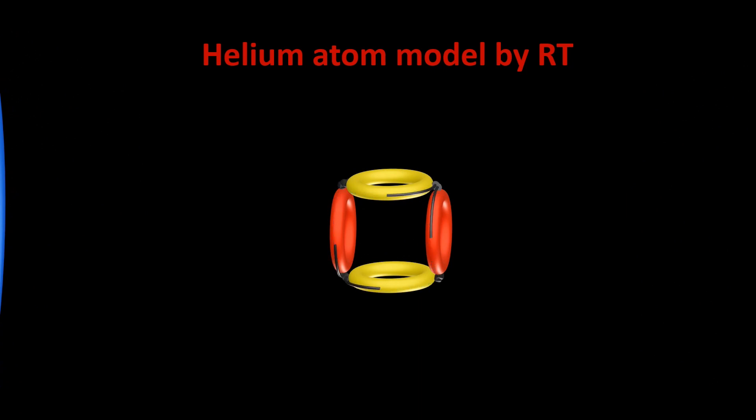To explain the structure and properties of the helium atom model according to the ring theory, we have to start with the helium atom nucleus structure model. According to the structure of the nucleus of the atom, the structure of the electron shell is derived.